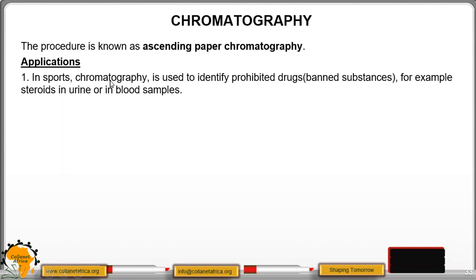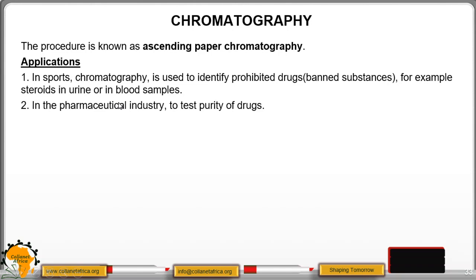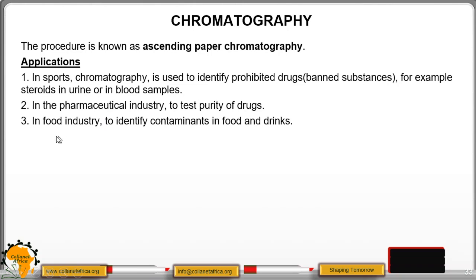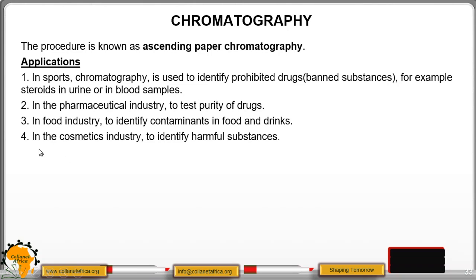In sports, chromatography is used to identify prohibited drugs or banned substances — for example, steroids in urine or blood samples. In the pharmaceuticals industry, to test the purity of drugs. In the food industry, to identify contaminants in food and drinks. And in the cosmetic industry, to identify harmful substances.